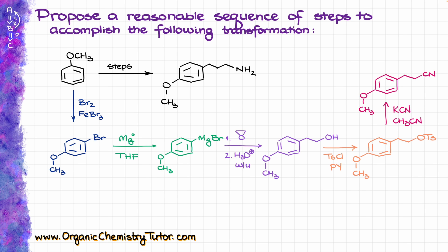Now we are ready for our last step, which is going to be the reduction of our nitrile to give us our final product. In order to do my reduction, I am going to use lithium aluminum hydride, which is going to give me a negatively charged nitrogen, so I would have to do the acidic workup. But since the primary amine that we are forming here is a base, we are also going to end up doing a basic workup after that. These types of reactions, whenever you are making your amines, actually have two workup steps, because you will have to neutralize your amine due to its acid-base properties.